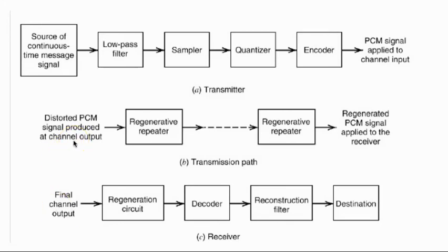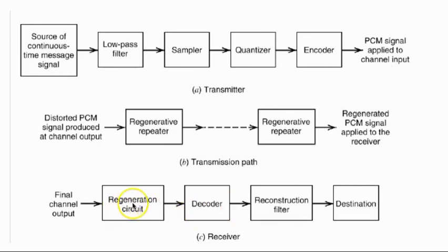For better clarity, this is the block diagram for a PCM signal: a source of continuous time message signal, passed through a low pass filter, then sampled and quantized — sampled on the x-axis, quantized against the y-axis — then encoded and sent to the channel. Over the channel it faces regenerative repeaters, and at the receiver a regeneration circuit followed by a decoder, reconstruction filter to reach the destination. This is the complete view of PCM modulation, demodulation, and transmission.